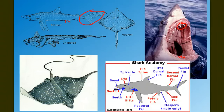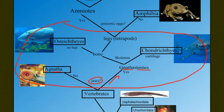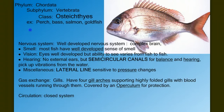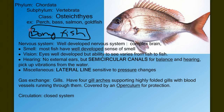That brings us to Osteichthyes. Going back: we have a vertebrate with a jaw and a skeleton made of bone. If it has a bony skeleton with a jaw and no legs, then we have the Osteichthyes — 'oste' means bone, 'ichthyes' means fish. These are our bony fish: the perch, trout, goldfish, salmon, tuna, and most other fish you could probably name.